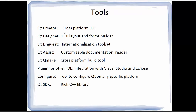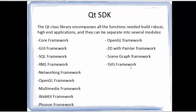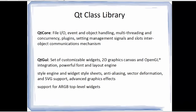And lastly, Qt comes with the Qt SDK which has rich C++ libraries to use. The Qt class library encompasses all the functions needed to build a robust, high-end application and they can be separated into several modules. Qt comes with a Qt Core framework, a GUI framework, SQL, XML, networking, OpenGL framework, and frameworks for multimedia, WebKit, and many others.